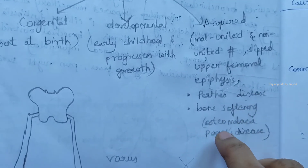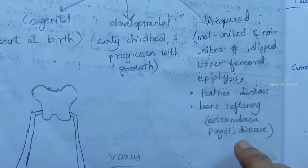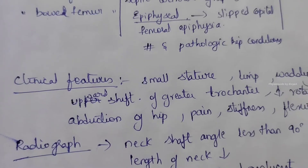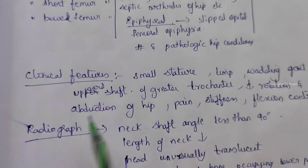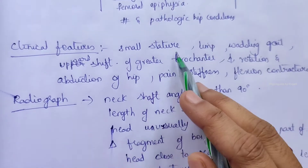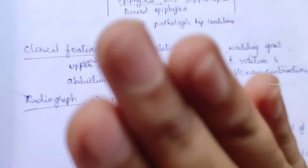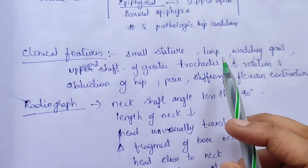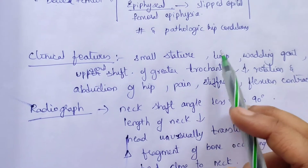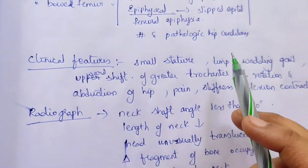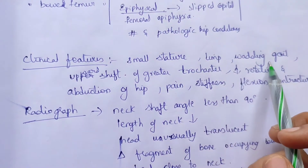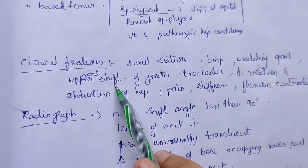Other acquired causes include Perthes disease, which is a disorder of the hip in young children, and bone softening conditions such as osteomalacia and Paget's disease. Now we'll look at the clinical features. There will be a short limb, limping gait where one leg is unable to walk properly, and waddling gait.